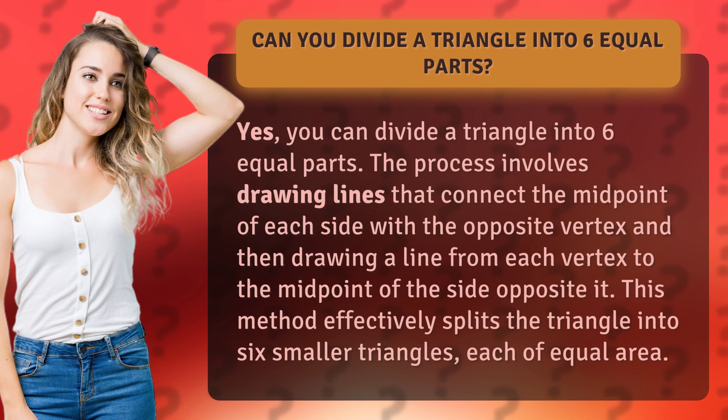Then draw a line from each vertex to the midpoint of the side opposite it. This method effectively splits the triangle into six smaller triangles, each of equal area.